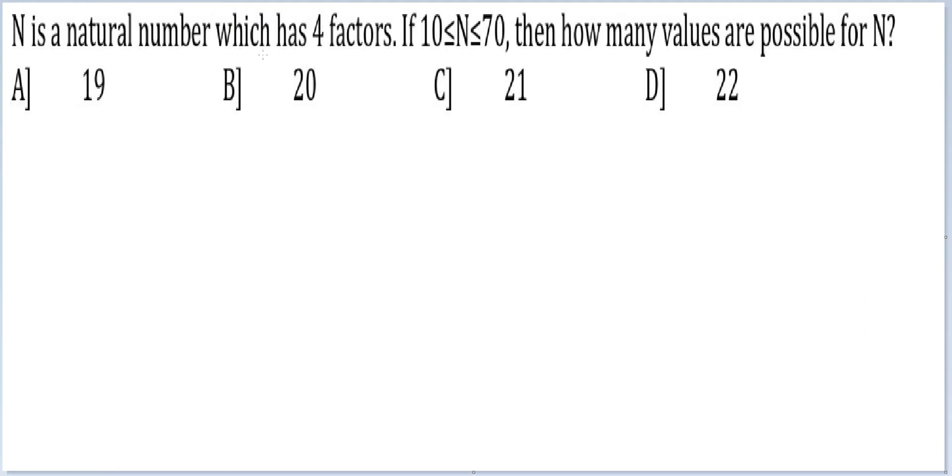Okay, so first thing you can infer is, because the number has 4 factors, the number is either of this type: a prime number raised to the power 3, or some prime number multiplied by some prime number raised to the power 1 and 1. Here the total number of factors is 4, here the total number of factors is 2 into 2 which is equal to 4.